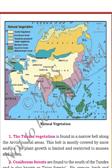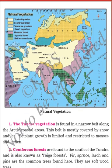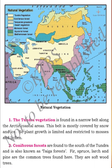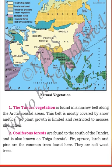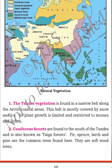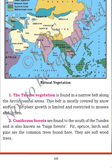The first natural vegetation is tundra vegetation. It is found in the narrow belt along the arctic coastal area and is mostly covered by snow.